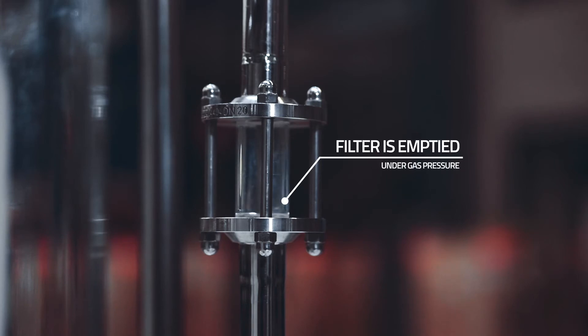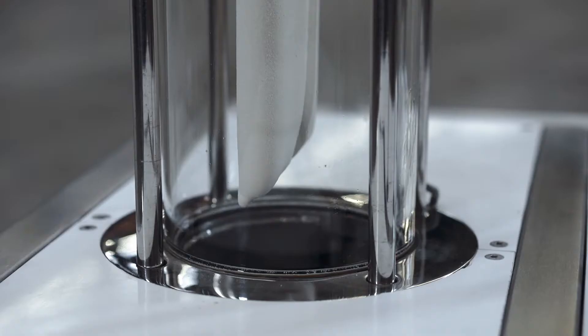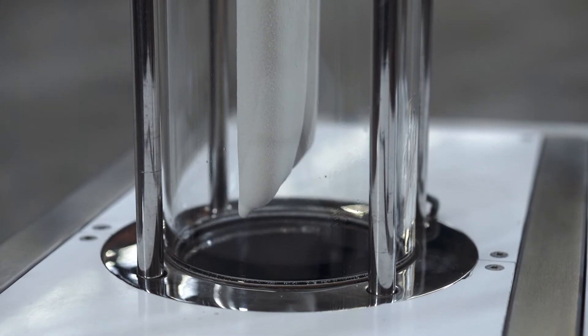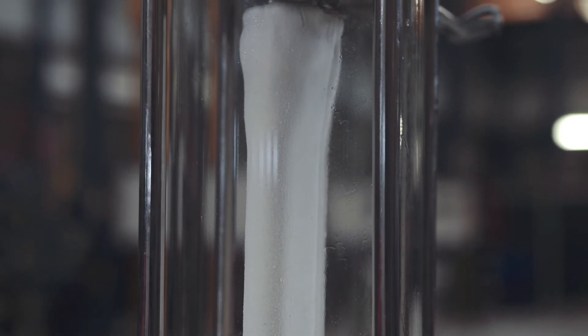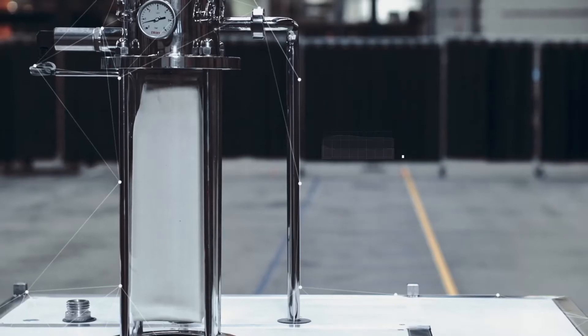After the filtration is stopped, the filter is emptied under gas pressure to keep a positive pressure loss over the filter cake, preventing premature cake discharge. The filter cake is dried for a specific time period using compressed air, nitrogen, or steam to minimize liquid losses and to obtain a dry cake.